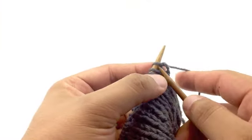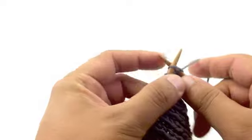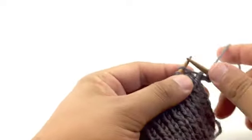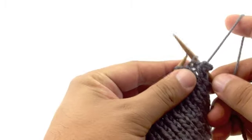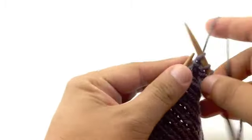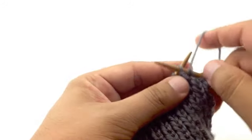The first thing we're going to do is knit all of the knit stitches and then slip the purl stitches with the yarn in front. We're going to do this for two rows.